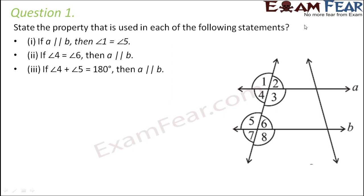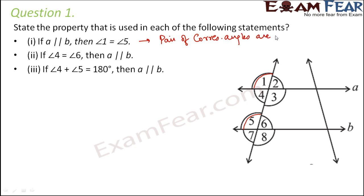Question number 1: State the property used in each of the following statements. If A is parallel to B, then angle 1 is equal to angle 5. These two lines are parallel to each other. Angle 1 and angle 5 are equal because they are corresponding angles. So the first property is: pair of corresponding angles are equal.